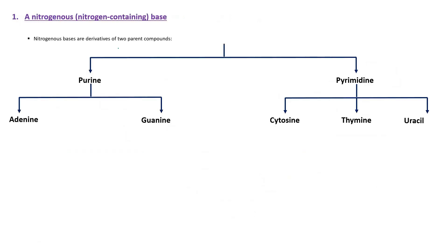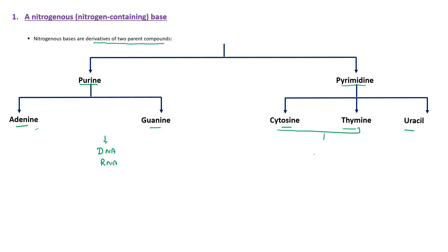Now let's look at nitrogenous bases. Nitrogenous bases are derivatives of two parent compounds: purines and pyrimidines. Purines are of two types: adenine and guanine. Pyrimidines include cytosine and thymine, which are present in DNA, and cytosine and uracil, which are present in RNA.